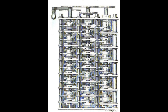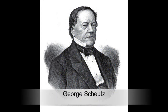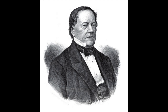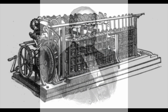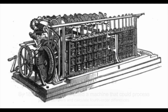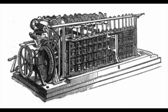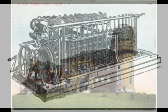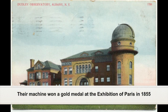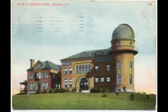Ten years later, another man named George Schutz read about the Difference Engine and was excited about what Babbage had been working on. Together with his son Edvard, Schutz began to work on a smaller version. Twenty years later, by 1853, the father and son had constructed a machine that could process 15-digit numbers and calculate fourth-order differences. This was very advanced programming for a machine at the time. Their machine won a gold medal at the Exhibition of Paris in 1855, and later they sold it to the Dudley Observatory in Albany, New York. The Dudley Observatory later used it to calculate the path of the planet Mars.